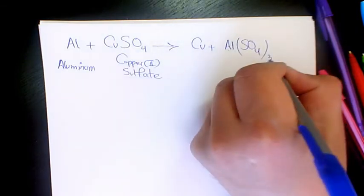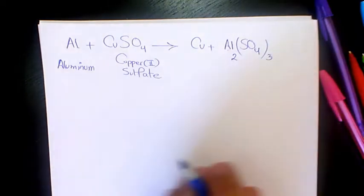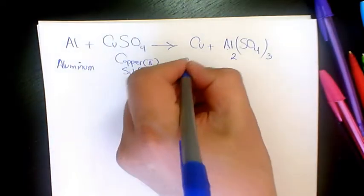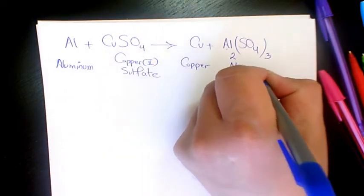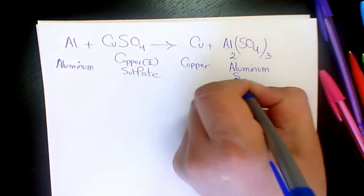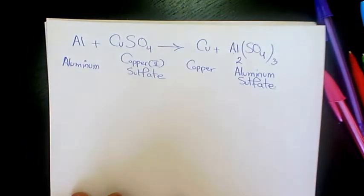3 in here, 2 in here. So 3 is gonna sit here, 2 for sulfate is gonna sit here. Now we can call it copper, and this one is gonna be aluminum sulfate. Let's see how to